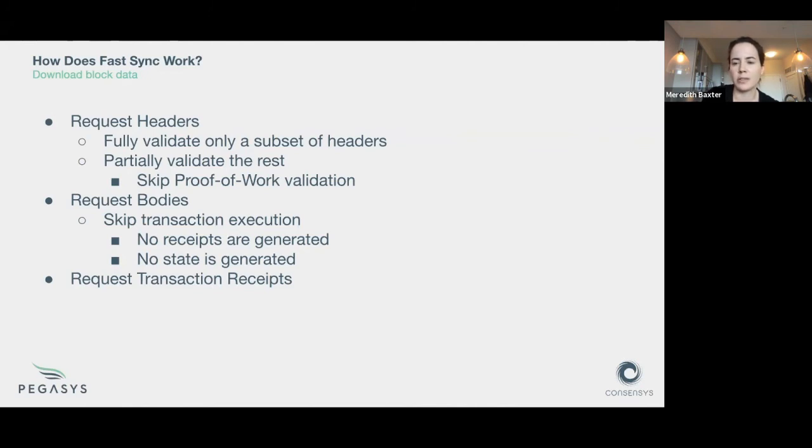I see there's a chat message but I'm full screen so I can't see. Nico's asking how is the pivot block defined? There's basically a configuration parameter that says how far from chain head do you want to select the pivot block, and that's how we choose that. We look at the network, we look at the most advanced chain head, and we go some distance in the past from that. So if our best peer is at block seven million and we're configured to select a pivot block that's a thousand blocks back, we'll just do seven million minus a thousand, and that's the height of our pivot block.